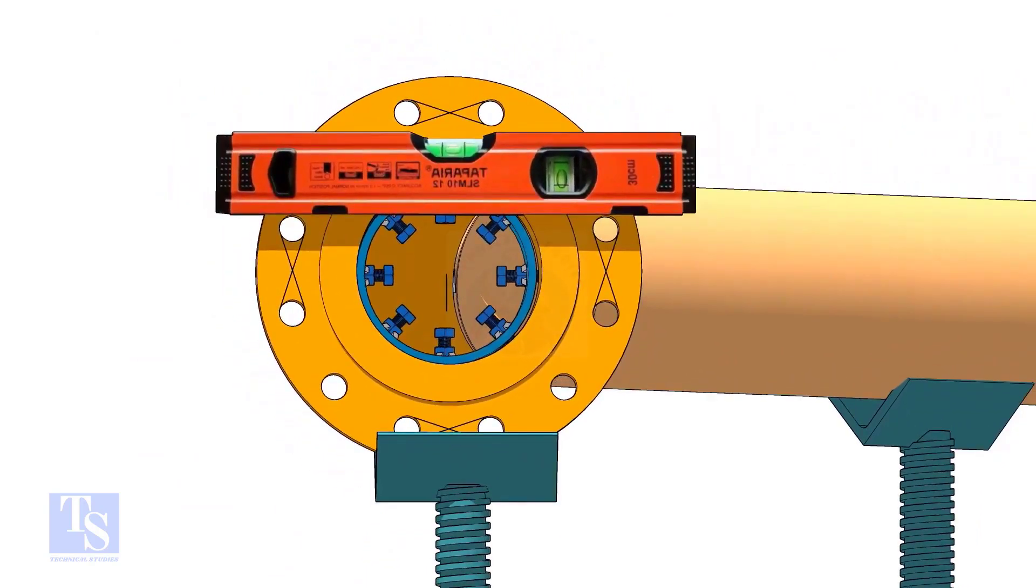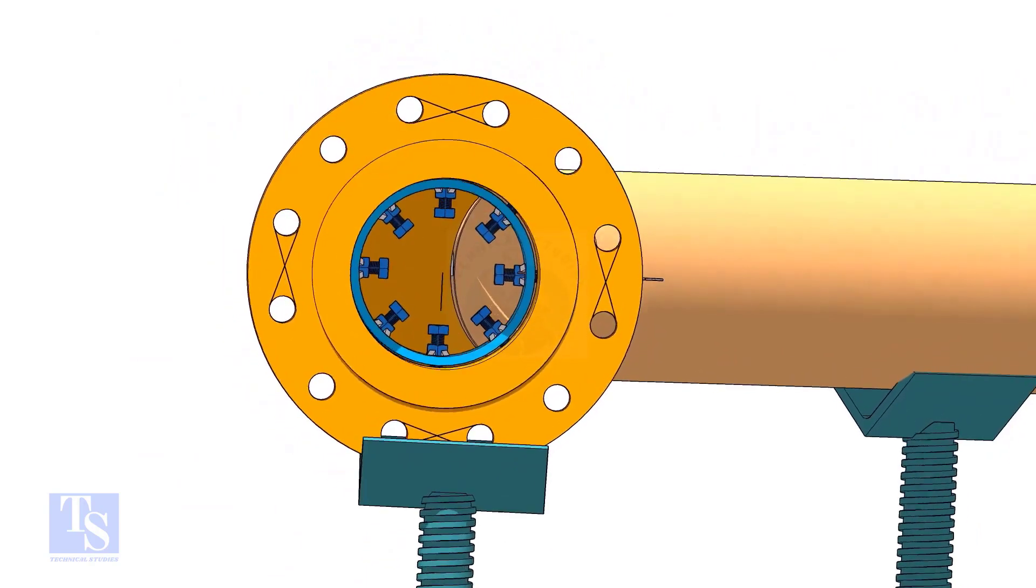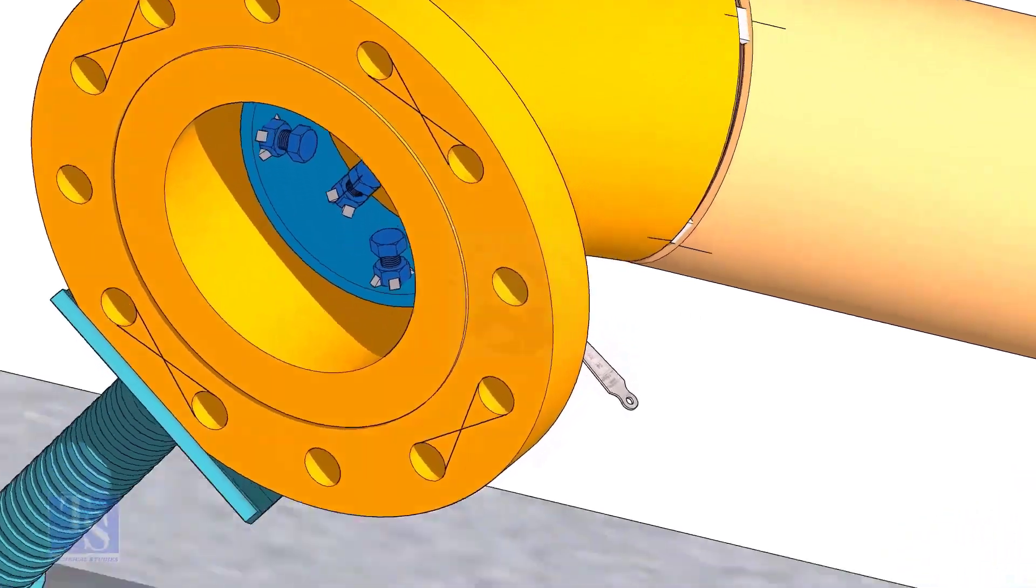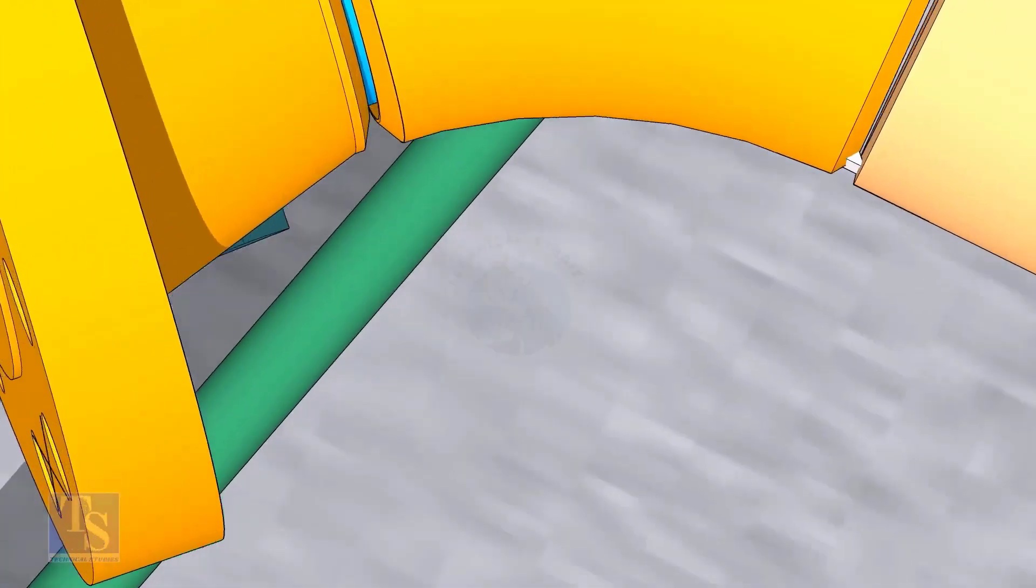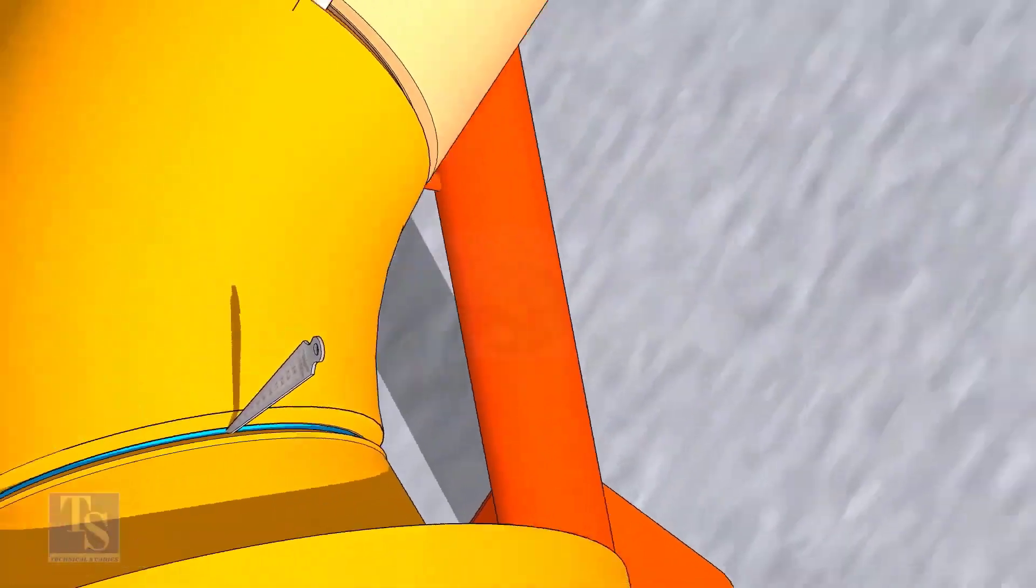Tighten the clamp bolts lightly. Check the gap and the overlap. Tack weld on the top and bottom sides of the joint.